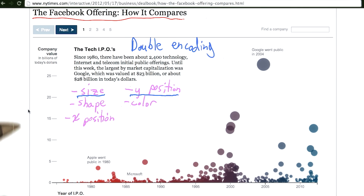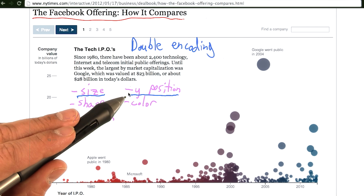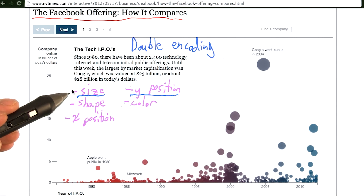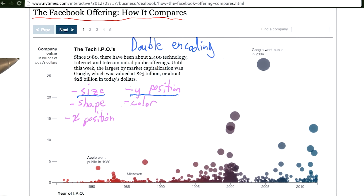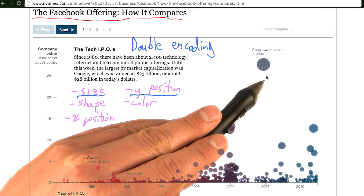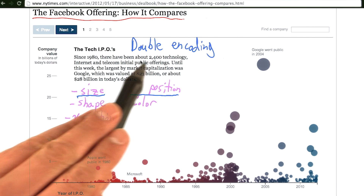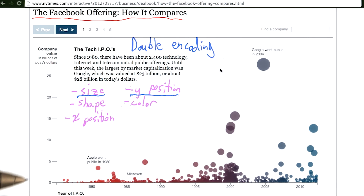In this case, the y-axis representing company value is encoded both in the y coordinate or y position of its circle, but also in the size or radius of that circle. The greater a company's value, the larger its circle will be and the higher it will be placed on the y-axis. This double encoding of the company value really emphasizes its importance in this visualization, especially since positional encodings are the most accurate encoding.